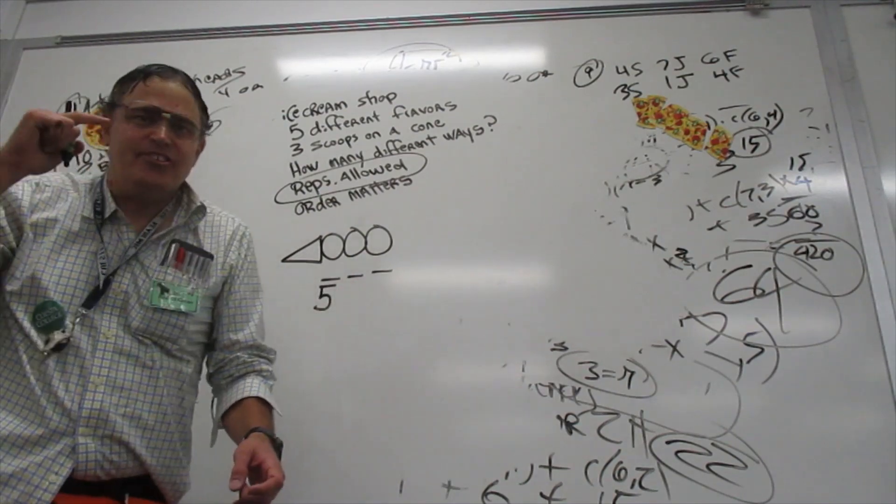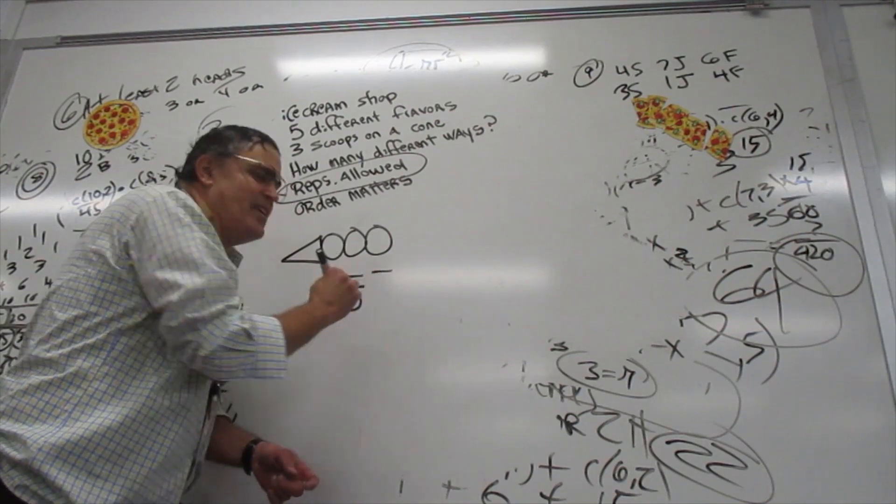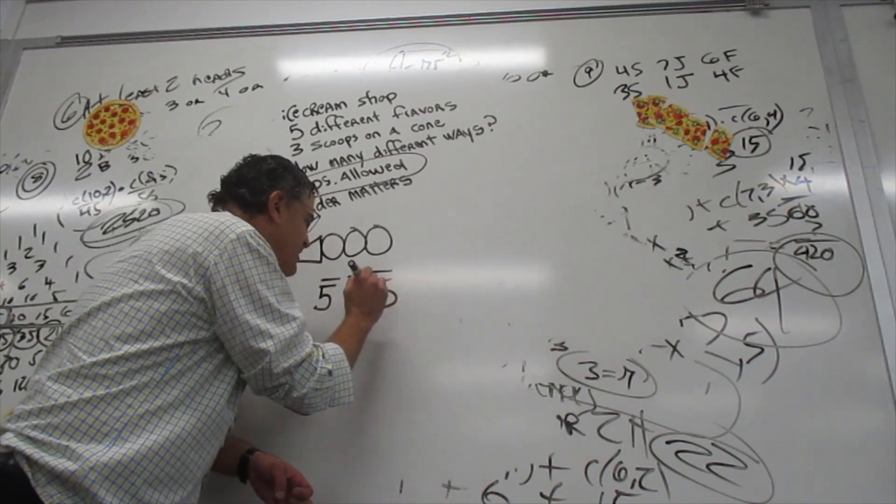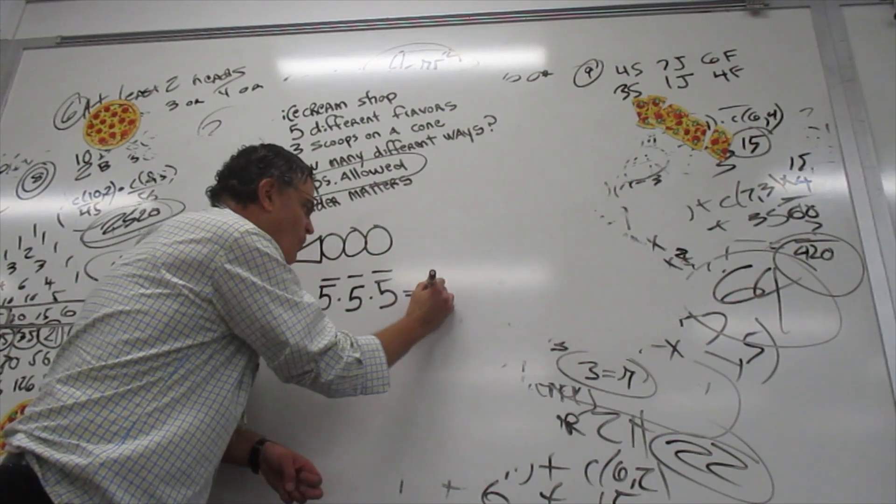And then you say, how many flavors can I put for the middle scoop? Five. And for the top scoop? Five. You multiply those numbers together, you get 125.